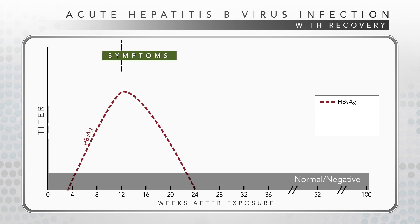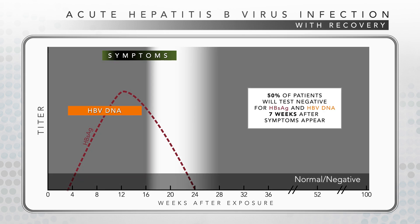Symptoms, when present, occur on average 12 weeks after exposure to HBV, with a range of 9 to 21 weeks. This period is noted by the green bar. When the serologic test for HBsAg is positive, HBV DNA can usually be detected in the patient's blood. The duration of detection of HBsAg and hence HBV DNA is variable. About 50% of patients will test negative for HBsAg and HBV DNA by seven weeks after symptoms of acute illness have appeared.